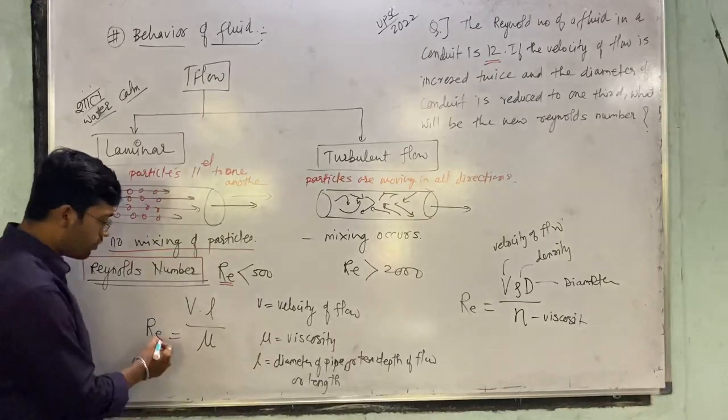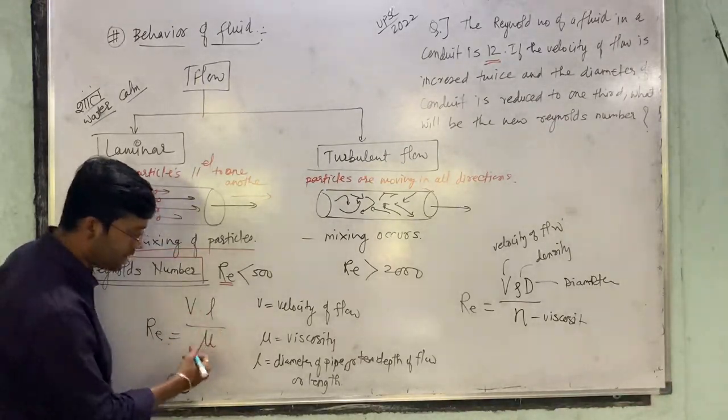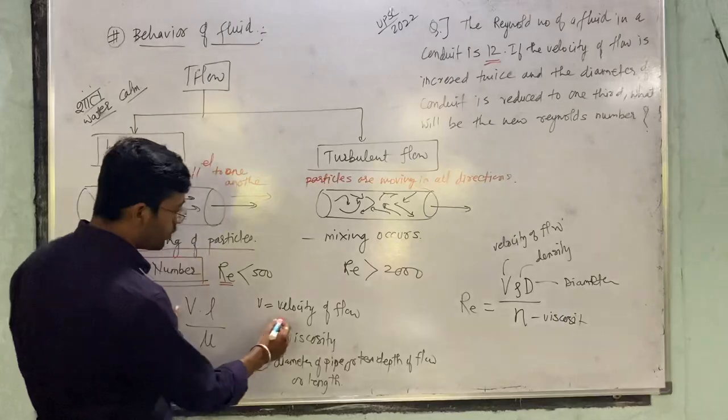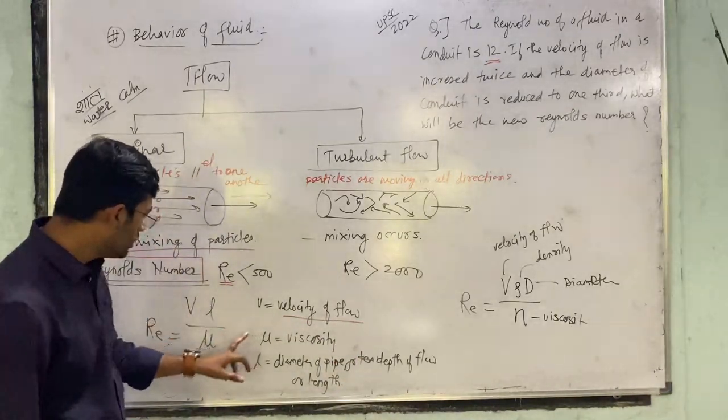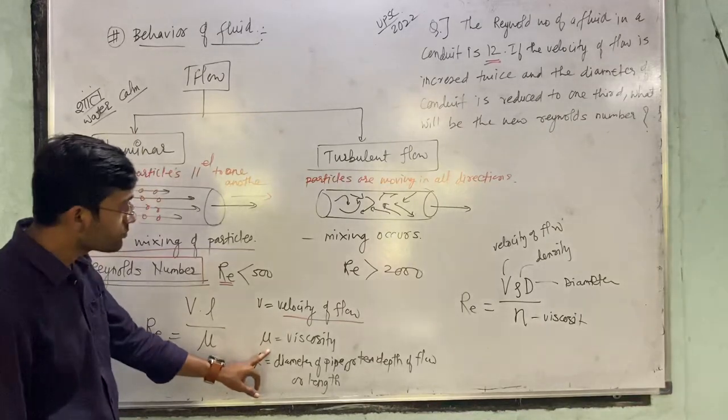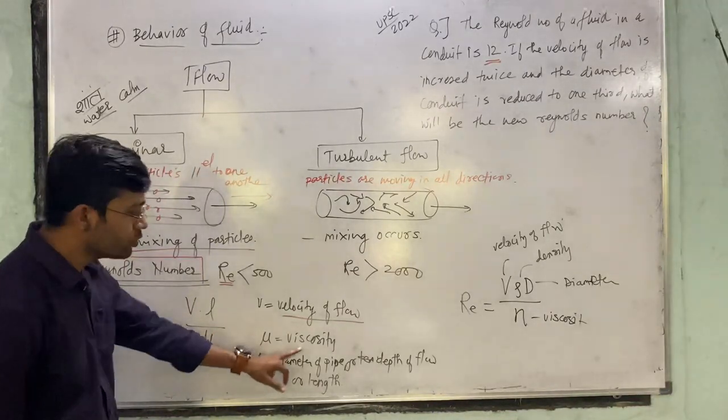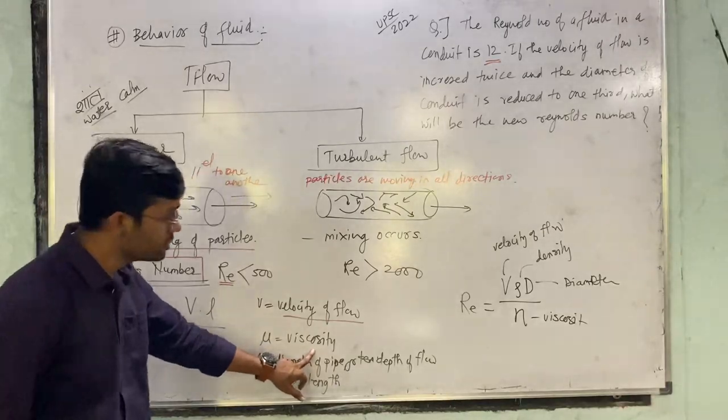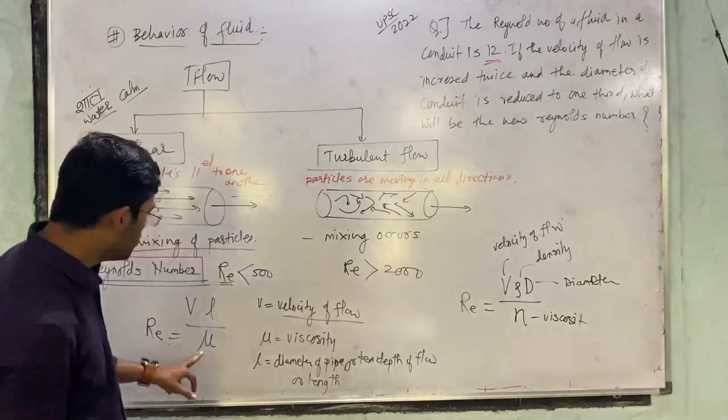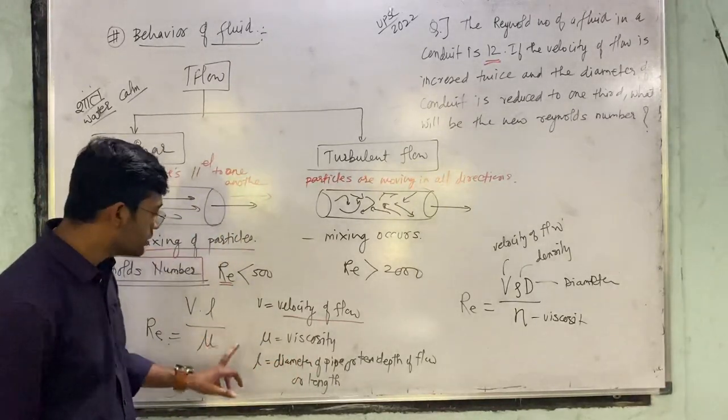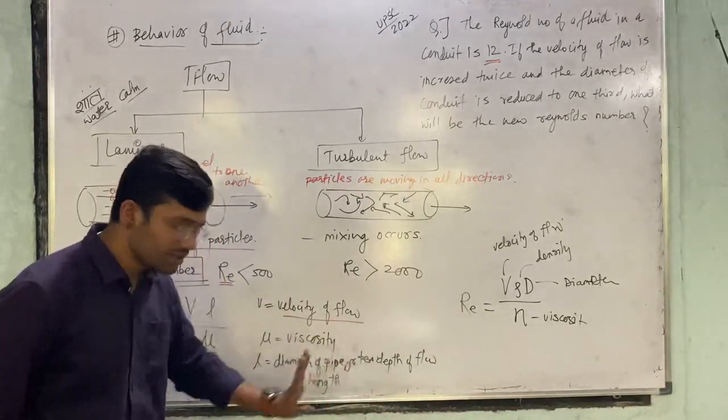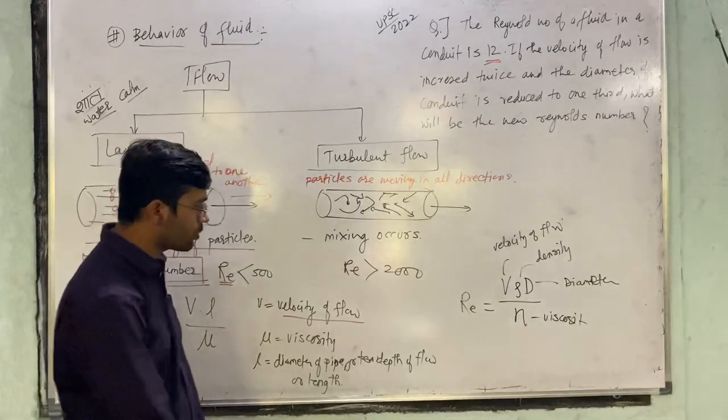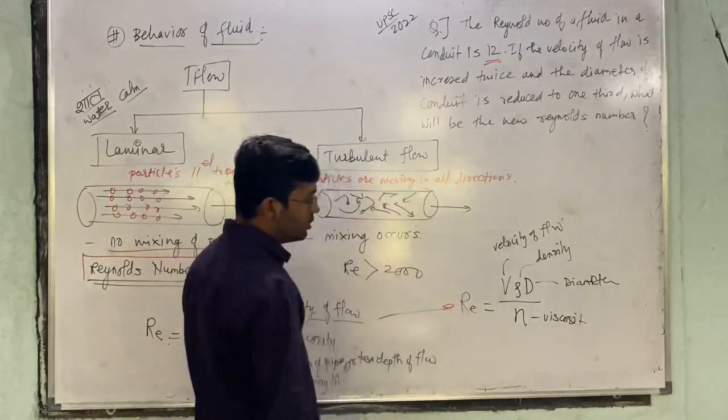We have the formula of Reynolds number: R = VL/μ. V is your velocity, flow velocity. Mu is your viscosity. Viscosity is resistance to flow. L is the diameter of the pipe or the depth of the flow or the length.